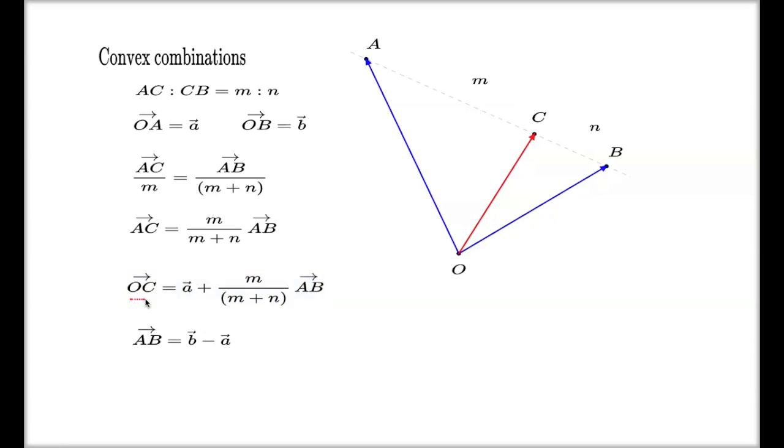So first we found the OC vector by adding up the OA and AC. That's the result for that. Now for the AB, for the full length of this segment, I have to subtract the A vector. That's my A vector, that's my B vector. I have to subtract A from B. Here it is. If I now substitute this into here, that's the kind of expression I will have.